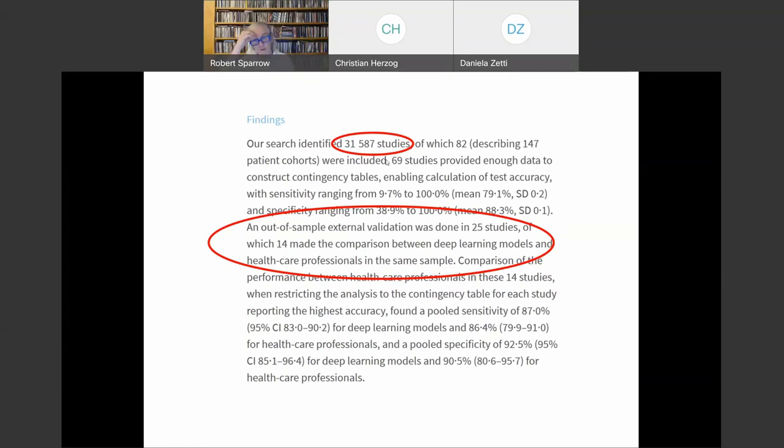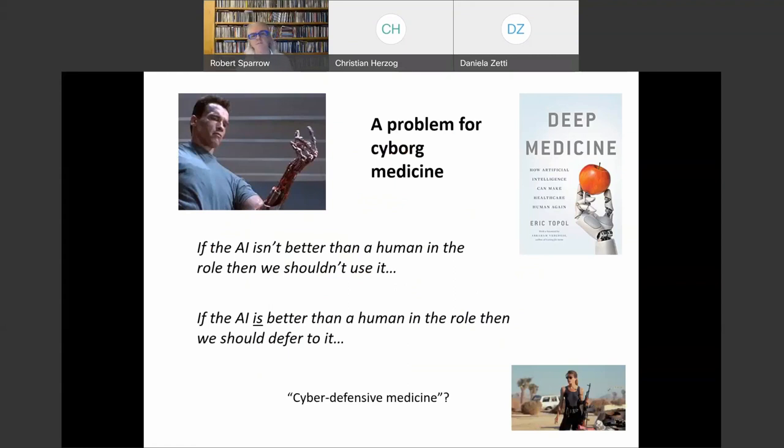If you push harder on this literature and want to see data on performance in the wild, like when these things are actually rolled out in the clinic, and you want good long-term longitudinal data comparing the performance of AI systems and human physicians, there's really very little there. That being said, it doesn't seem unlikely to me that machines will outperform human beings in various roles. Machines outperform human beings in all sorts of things already.